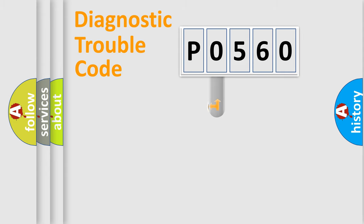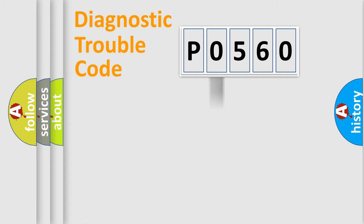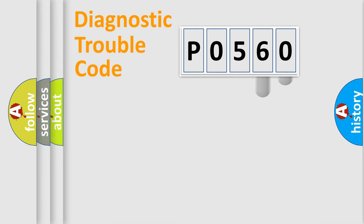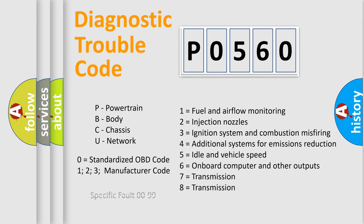This distribution is defined in the first character of the code. If the second character is expressed as zero, it is a standardized error. In the case of numbers 1, 2, or 3, it is a manufacturer-specific error. The third character specifies a subset of errors. This distribution is valid only for the standardized DTC code, and only the last two characters define the specific fault of the group.